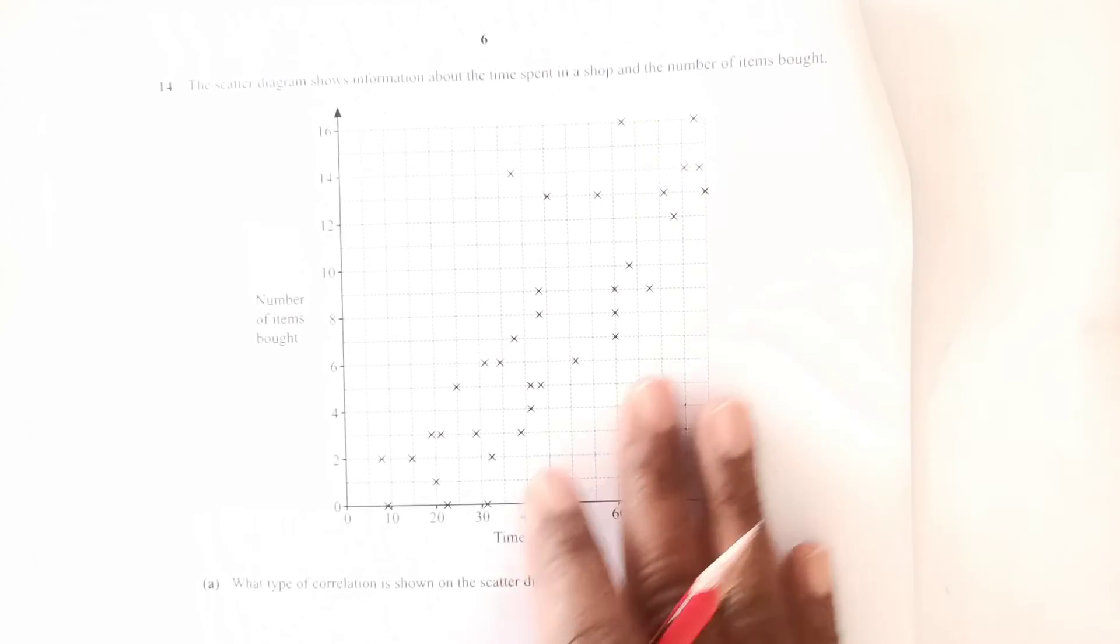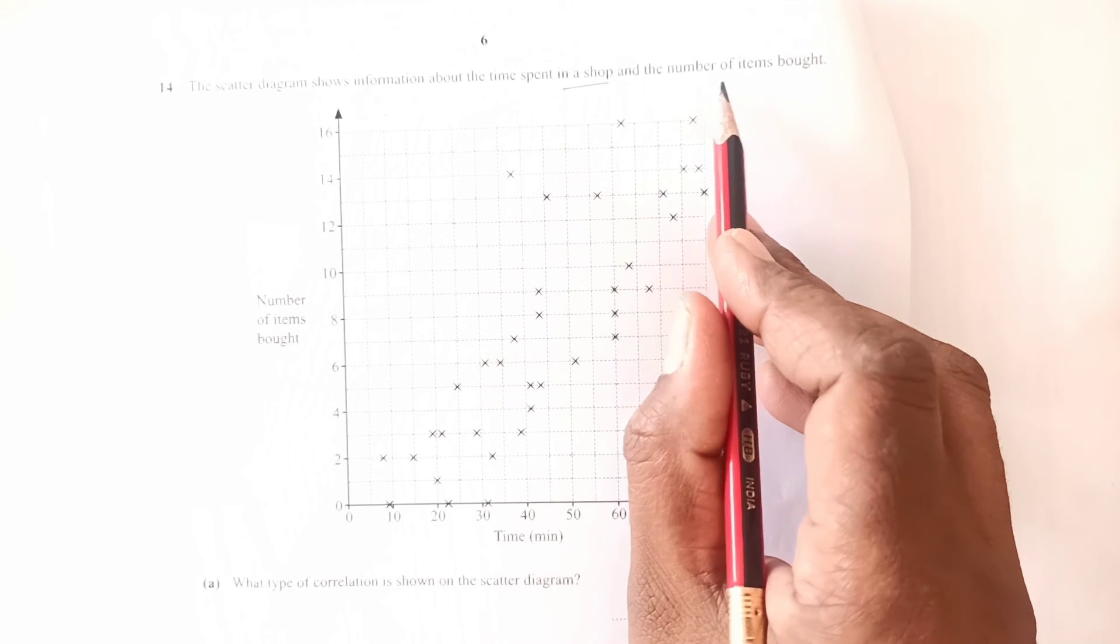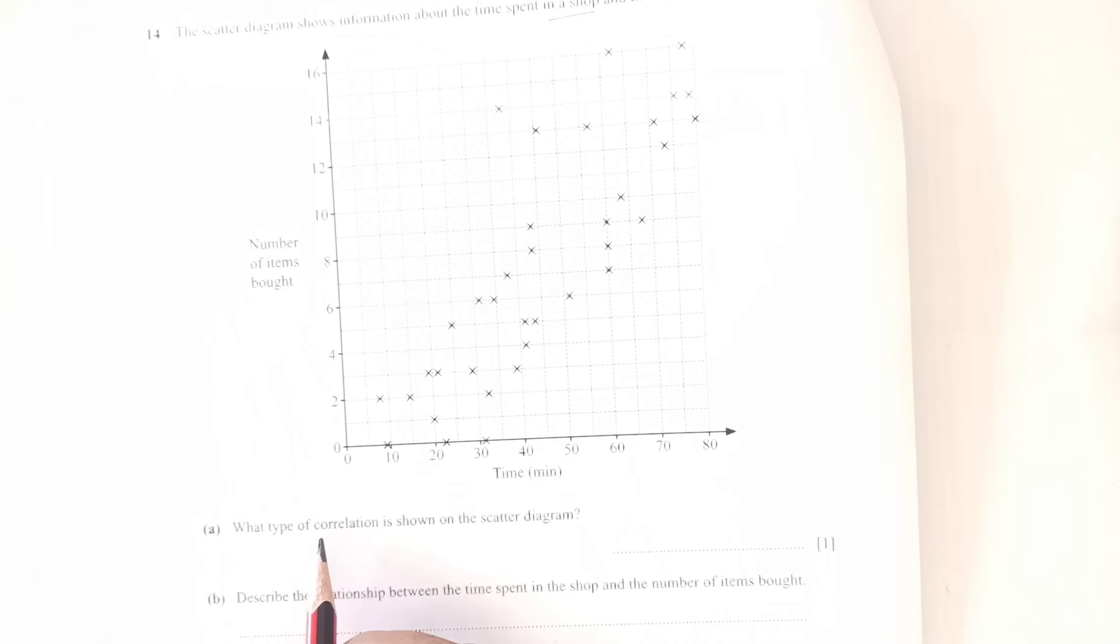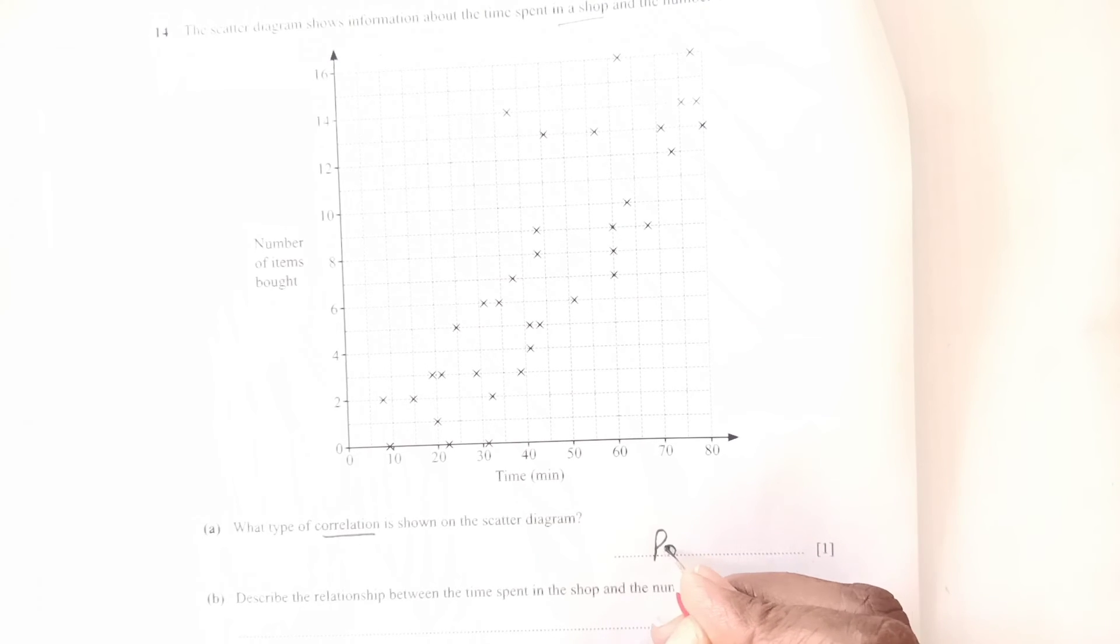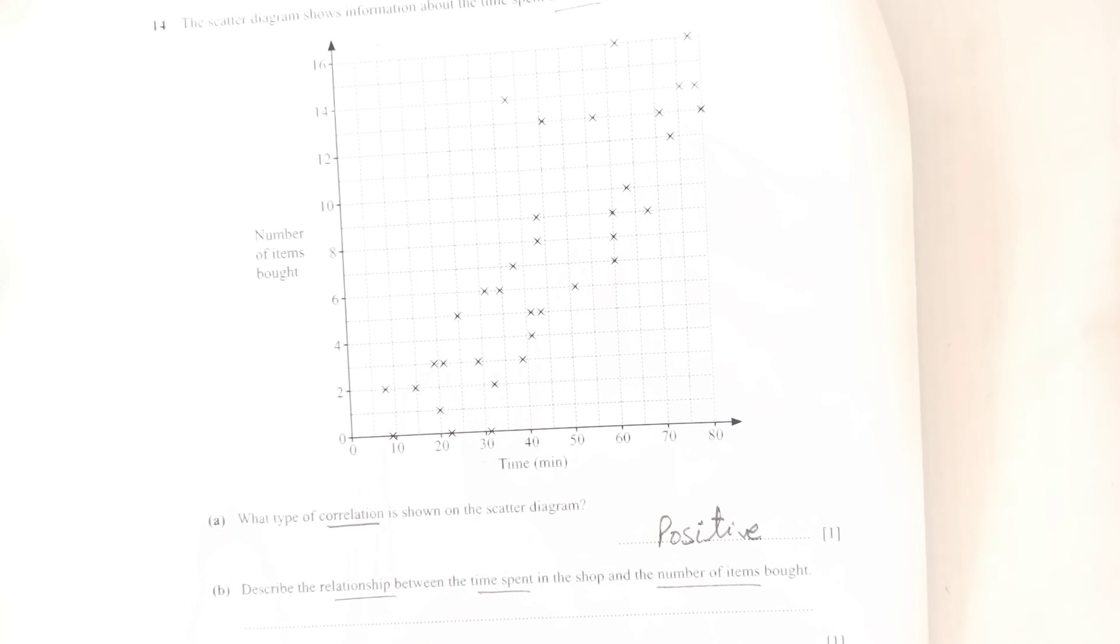Question 14: the scatter diagram shows information about the time spent in a shop and the number of items bought. What type of correlation is shown? As you see, as time grows, the number of items bought also goes upward, so this is a positive correlation.